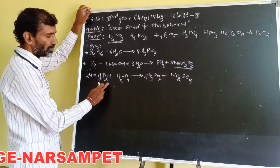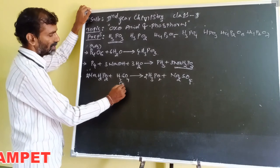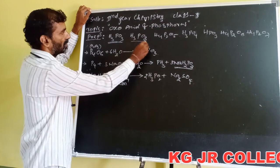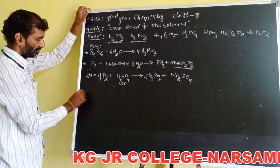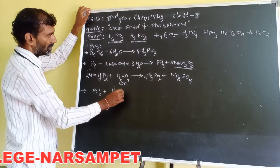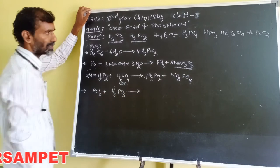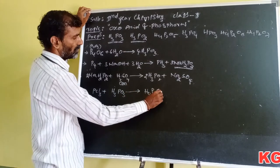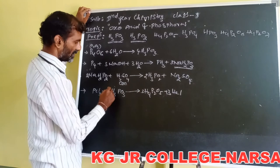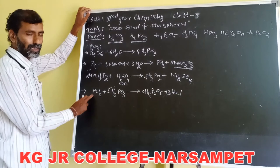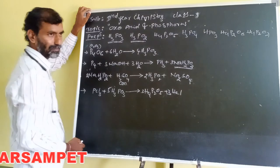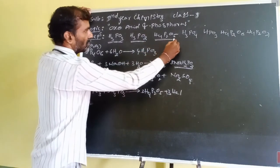Okay students. Next, H4P2O5. Phosphorus trichloride reacts with H3PO3, phosphorous acid, to give H4P2O5 plus HCl. Here it is 3 moles. Phosphorus trichloride reacts with phosphorous acid to give H4P2O5. So H4P2O5 is complete.